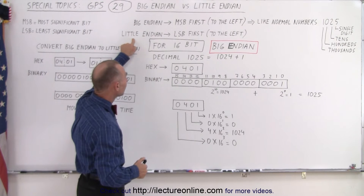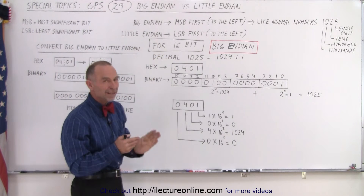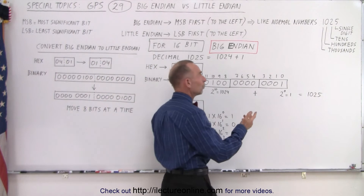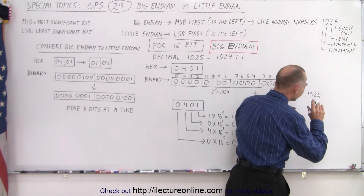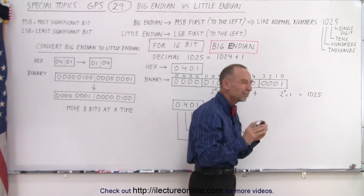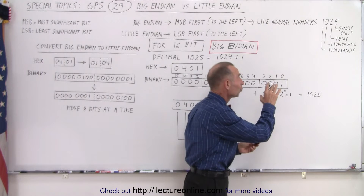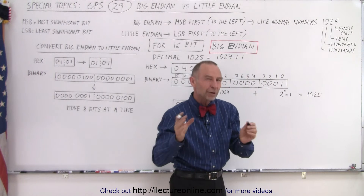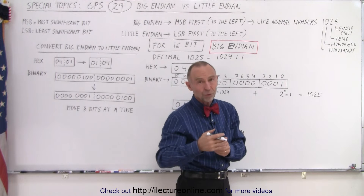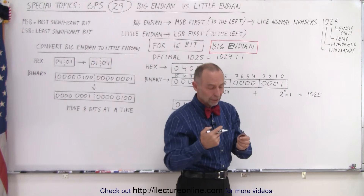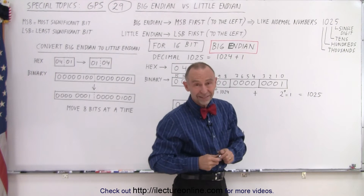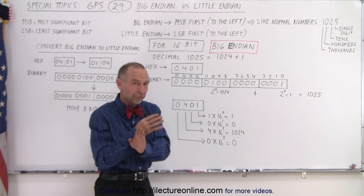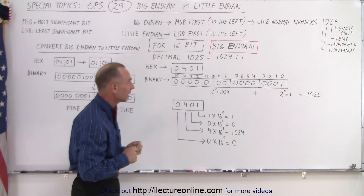Little Endian means LSB first — the smallest is first. I was tempted to write 5201, but that's not exactly how we convert in hex or in the 16-bit or 32-bit format. That's not exactly how we convert from one to the other, so let me explain that.